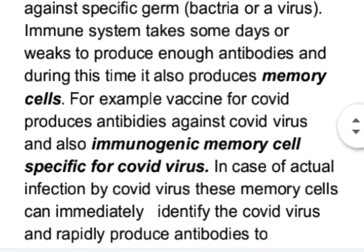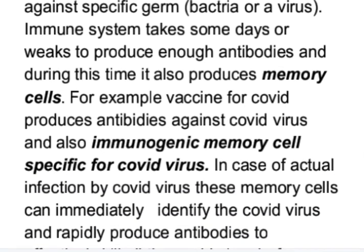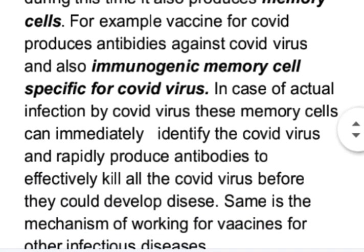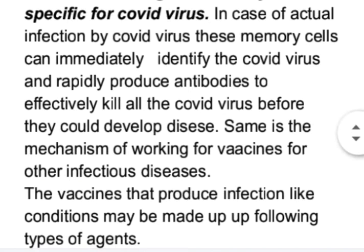For example, the vaccine for COVID produces antibodies against the COVID virus and also immunogenic memory cells specific for the COVID virus. In case of actual infection by the COVID virus, these memory cells can immediately identify the virus and rapidly produce antibodies to effectively kill all the COVID virus before it could cause disease. The same is the mechanism of working for vaccines for other infectious diseases.